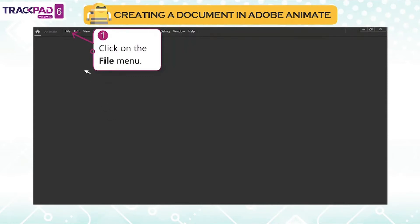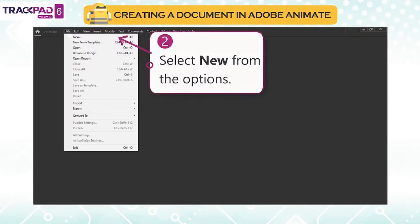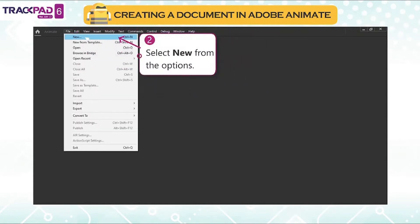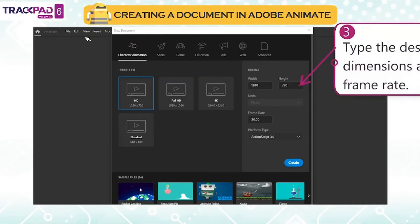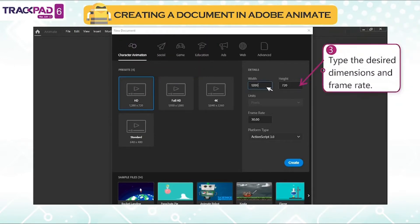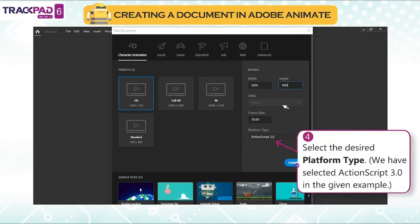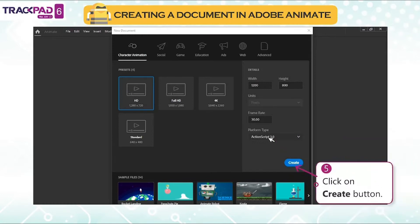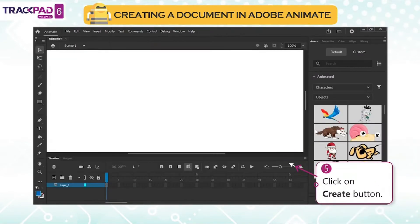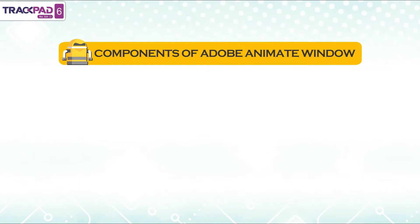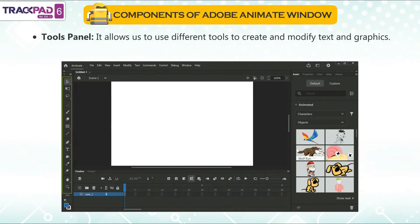Components of Adobe Animate window. Let us learn the components of the Adobe Animate window. Menu bar: it gives you access to all the commands available in Adobe Animate. File name tab: it shows the name of the current file, and also allows us to switch between files if more than one file is open. Tools panel: it allows us to use different tools to create and modify text and graphics.